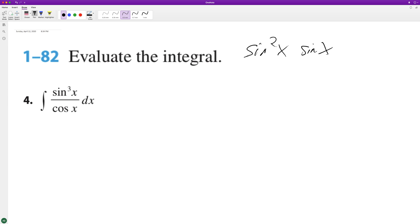So sine squared of x becomes 1 minus cosine squared x. And we have our sine of x and we have our cosine of x.